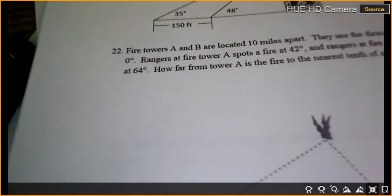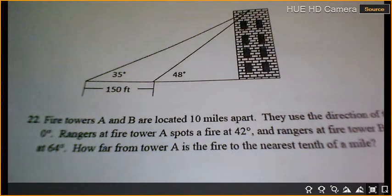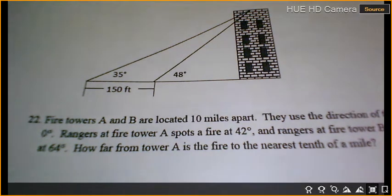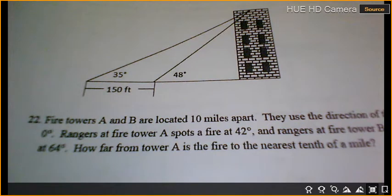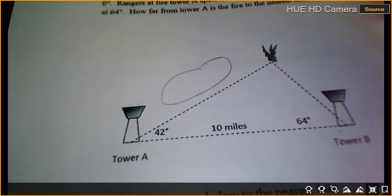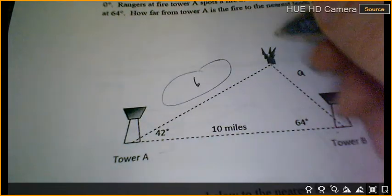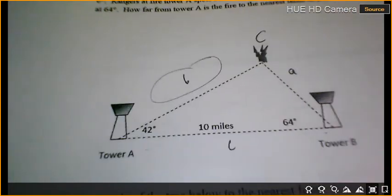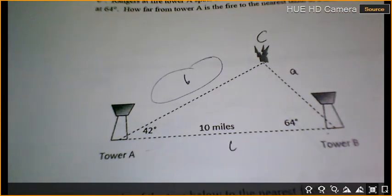Let's do 22. Okay, fire towers A and B are located 10 miles apart. They use the direction of the other towers as zero degrees. Rangers at fire tower A spot a fire 42 degrees. And rangers at fire B spot it at 64 degrees. How far from tower A is the fire? So I am looking for right here. That's what it's telling me. So if this is A, this is little A. If this is B, this is little B. If this is C, this is little C. We good so far?